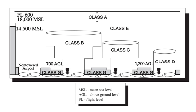Parachute jump aircraft operations are published in the Airport/Facility Directory. Sites that are used frequently are depicted on sectional charts.